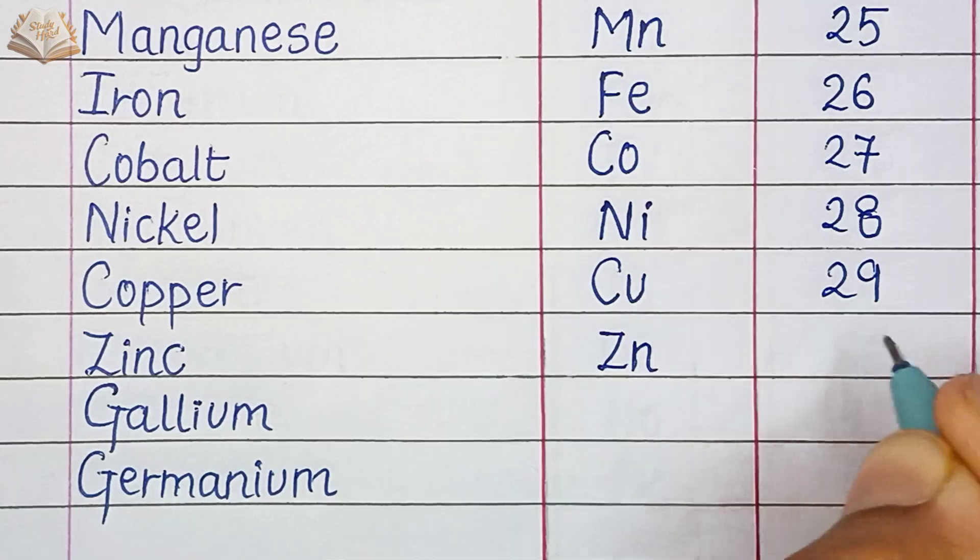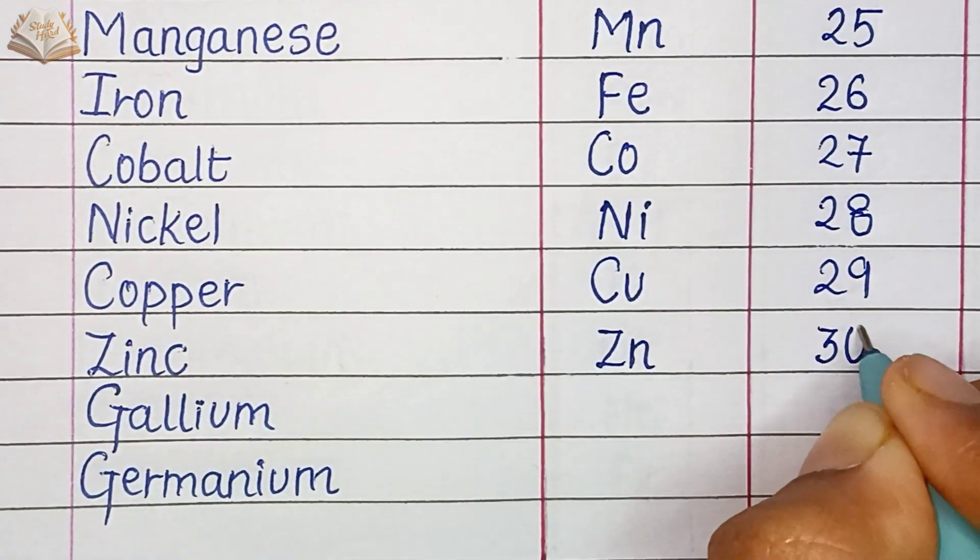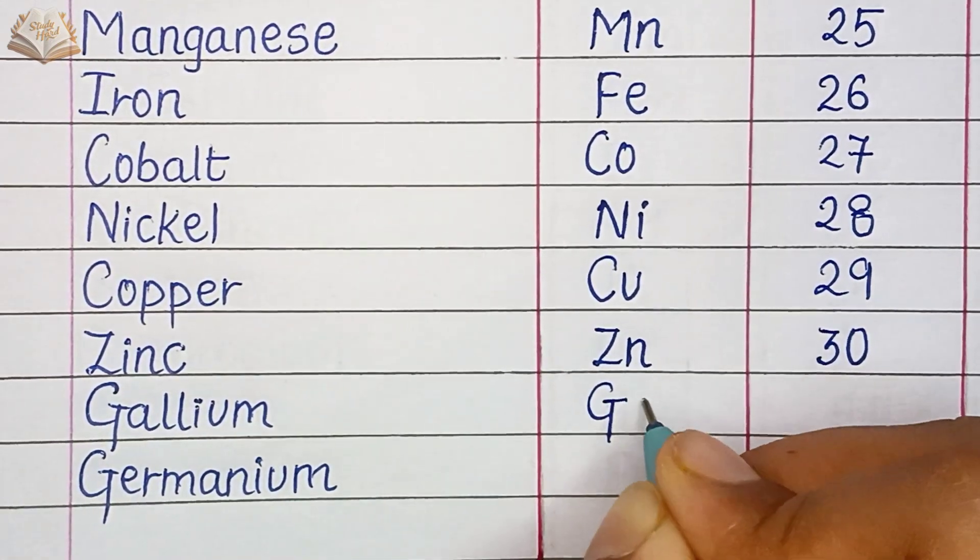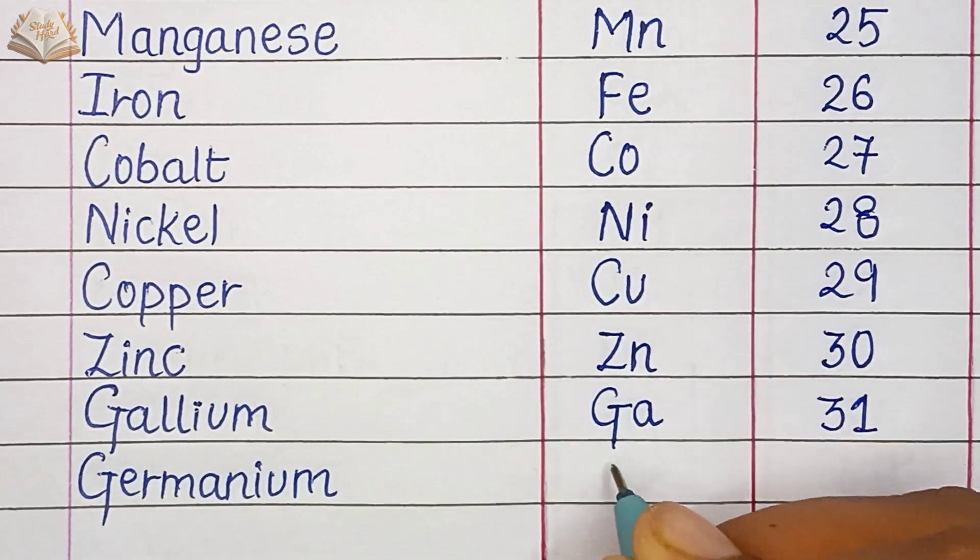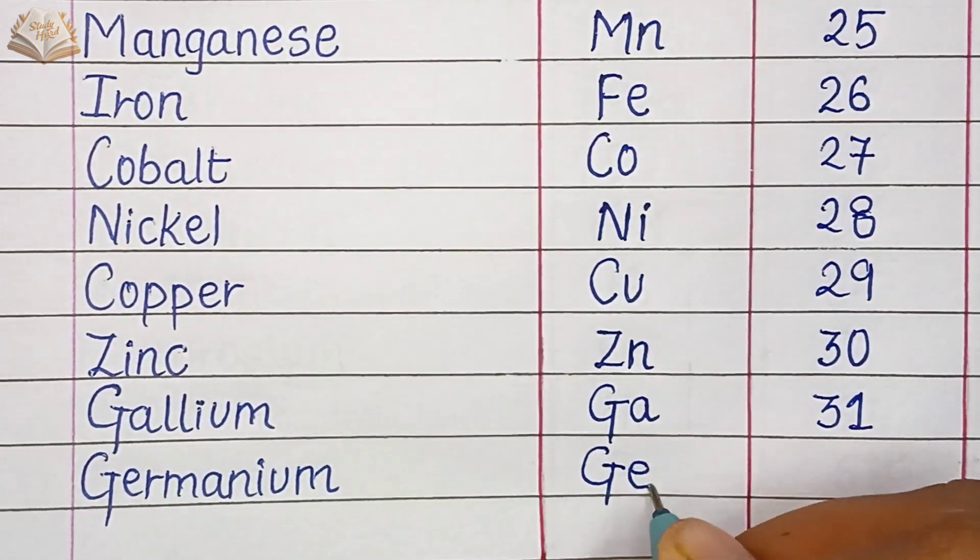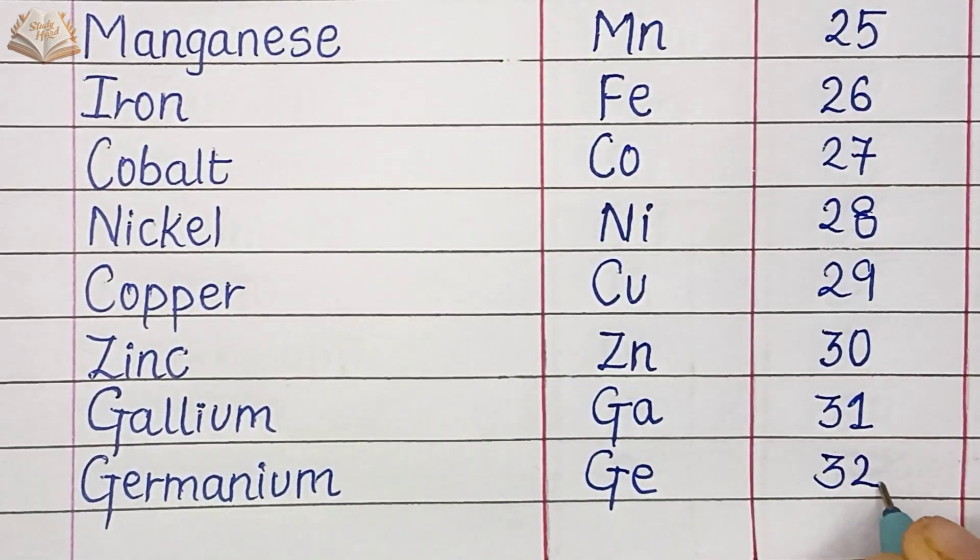Zinc, Zn, atomic number 30. Gallium, Ga, atomic number 31. Germanium, Ge, atomic number 32.